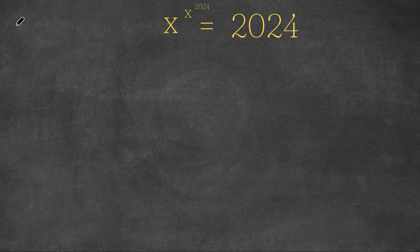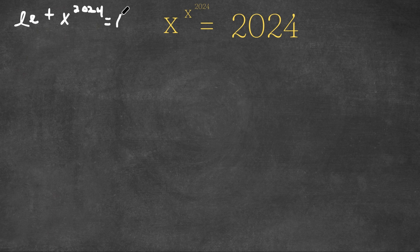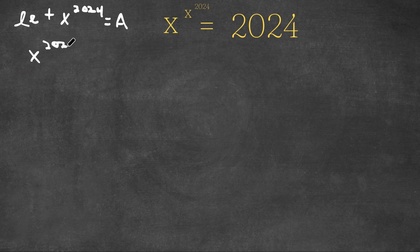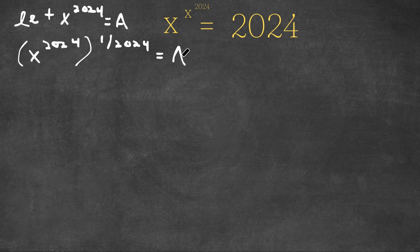What I'm first going to do is let x to the power of 2024 equal to the variable a. So now I'm going to take the power of 1 over 2024 on both sides. We have x to the power of 2024, to the power of 1 over 2024, is equal to a to the power of 1 over 2024.